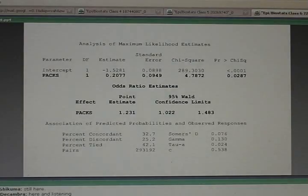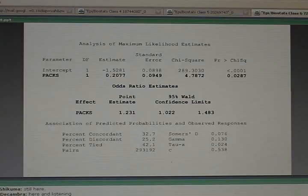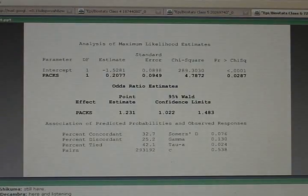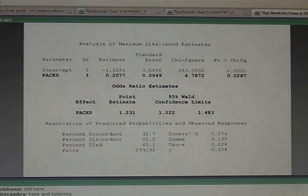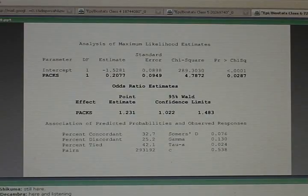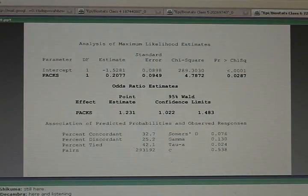More importantly, the slope coefficient, the coefficient of packs, 0.2077, does relate to an odds ratio, an odds ratio of 1.2. This is the odds ratio associated with smoking one additional pack of cigarettes a day. So a slope tells you how much your outcome changes when you increase your predictor by one unit.